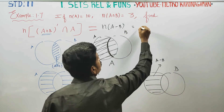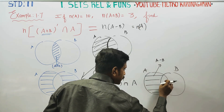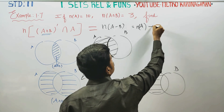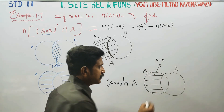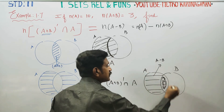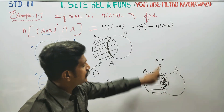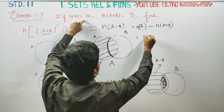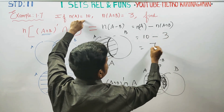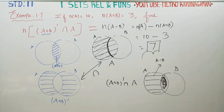Actually n(A) minus n(A intersection B) gives n(A minus B). So n(A) minus n(A intersection B): 10 minus 3 is 7, which is your answer. Venn Diagram method — only setting sets and defining sets. Venn Diagram is easy. Thank you.